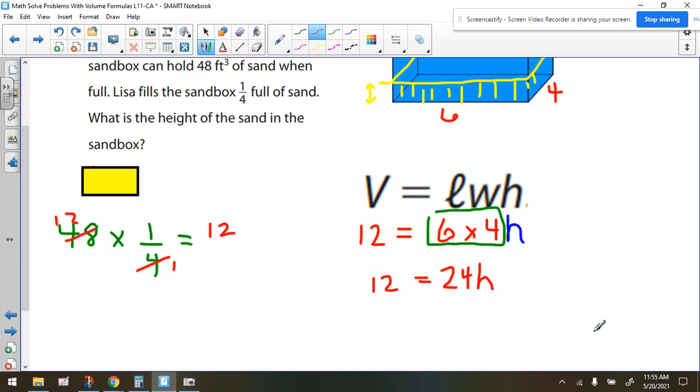And let's bring down the 12. So the next step is to recognize what's the opposite of multiplying a variable by 24. Wouldn't it be to divide by 24? And we would do that on both sides of the equation. And bring down the h.